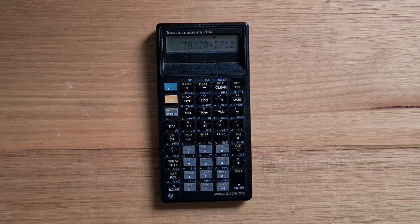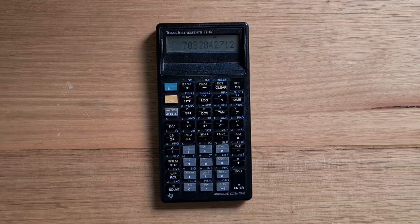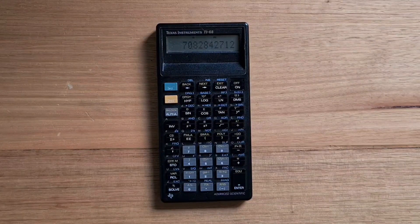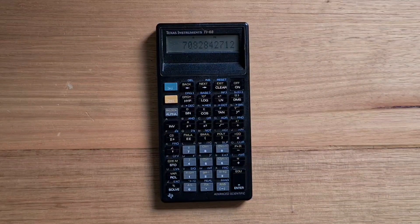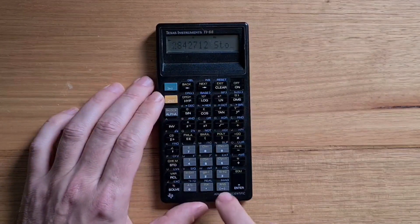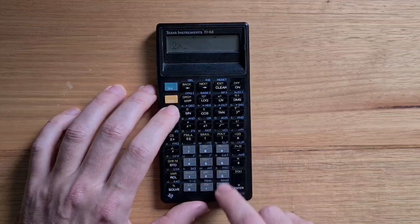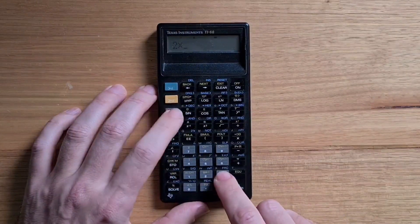With the full alpha keyboard, you can store values to variables with one, two or three letter character names. So we can store this value in X by hitting the store key and then alpha X, and then I can use that in another expression.